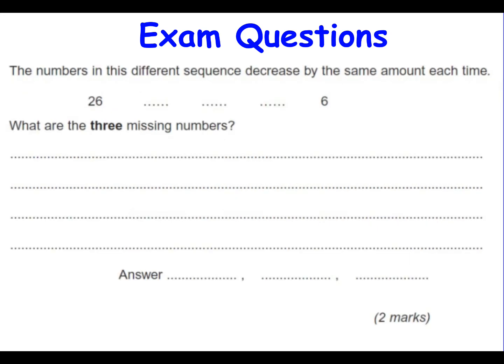Let's try another exam question. So here's a sequence of numbers. 26, 3 missing numbers and 6. What are the 3 missing numbers? So my gap from my 26 to my 6 goes down 20. And there are 1, 2, 3, 4 steps. So minus 20 divided by 4 gives me minus 5. So each step is telling me to subtract 5. So I end up with 21, 16 and 11. So the 3 missing numbers are 21, 16 and 11.